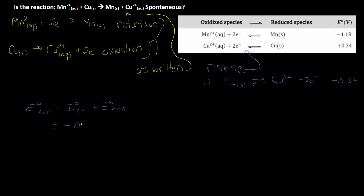When I compute the standard potential of the cell, negative 0.34 plus negative 1.18 gives me negative 1.52 volts.